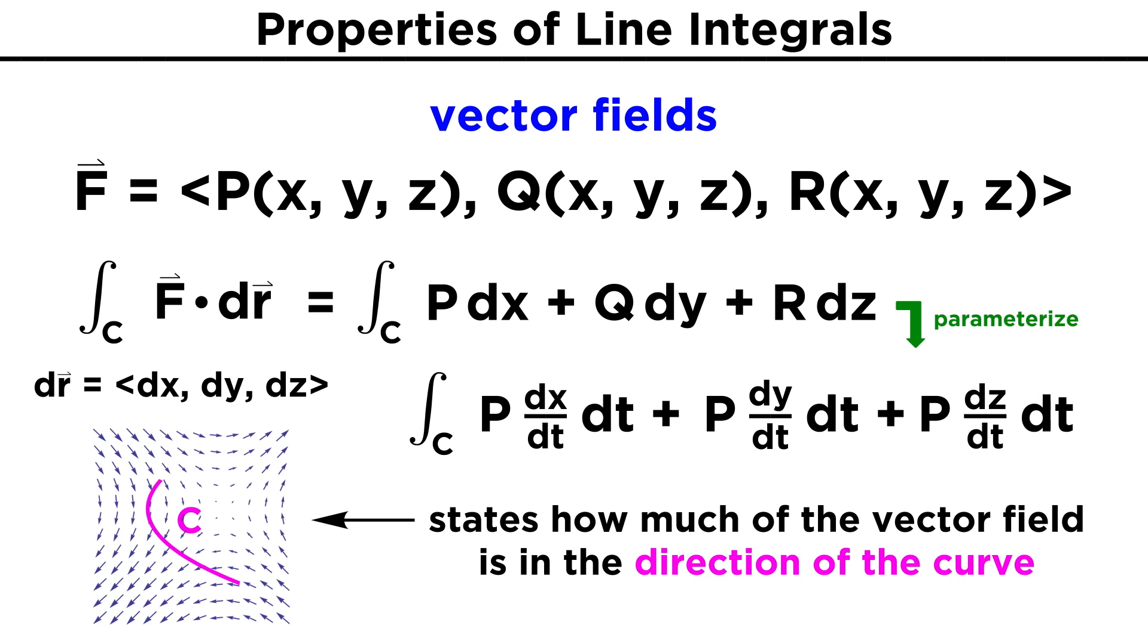What this line integration calculates with vector fields can be thought of as how much of the vector field is in the direction of the curve. This makes sense as we are dotting the vector field, which takes the tangential component of the field to the path of the curve. In physics, this calculation can be used to find the work done by a force along a path.